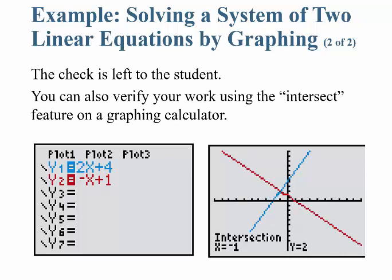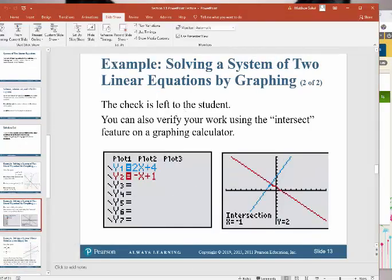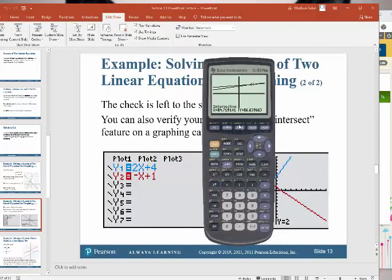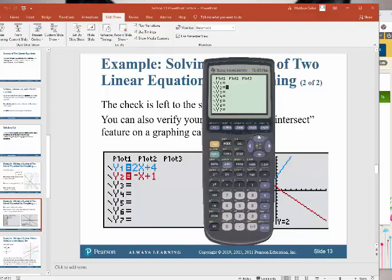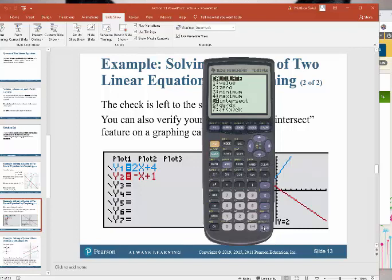You can verify your work using the intersection feature on the calculator. Go to zoom standard (zoom, number 6), then hit y= and clear both lines. Re-enter the two lines: 2x + 4 and -x + 1. When you graph these, you can see the intersection point. Hit second function, calc, number 5 for intersect, then enter three times. It tells you the intersection point is (-1, 2) — exactly what we saw.